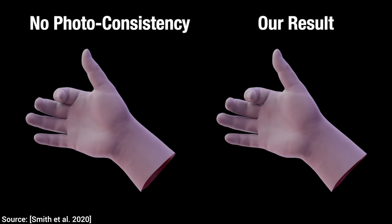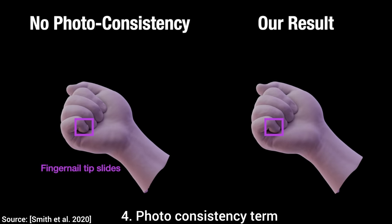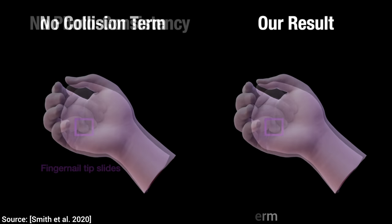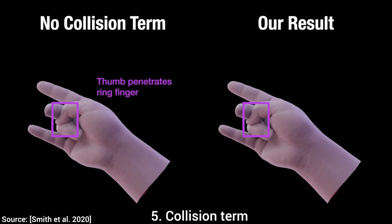With the worst already behind us, let's proceed to ingredient number four, the photo consistency term. This ensures that fingernail tips don't end up sliding into the finger. And five, the collision term fixes problems like this to make sure that the fingers don't penetrate each other.